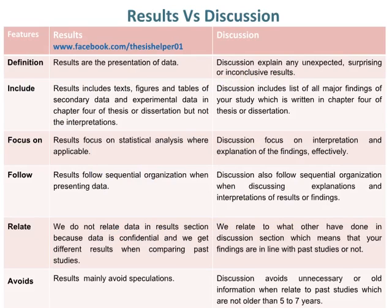Results includes texts, figures, and tables of secondary data and experimental data in chapter four of a thesis or dissertation, but not the interpretations. Whereas discussion includes a list of all major findings of your study, which is also written in chapter four of a thesis or dissertation.